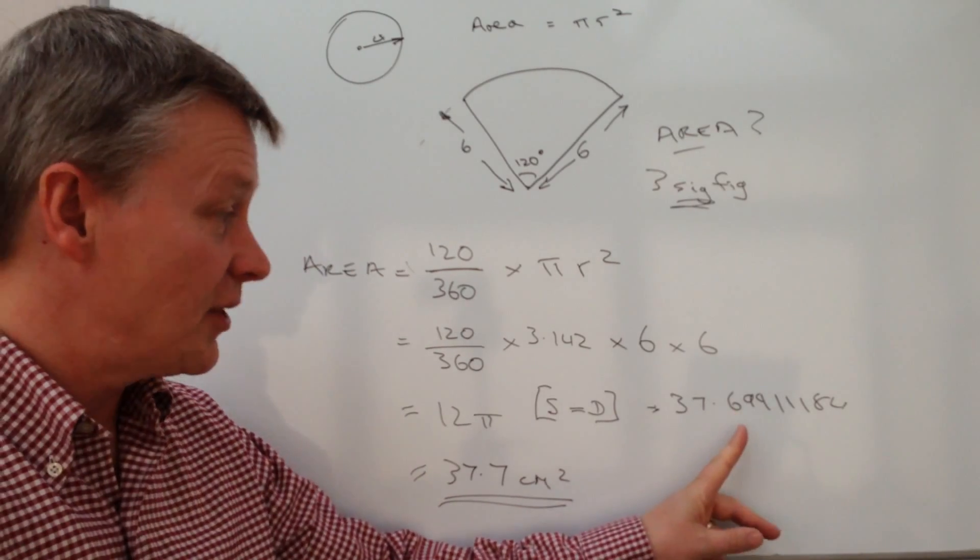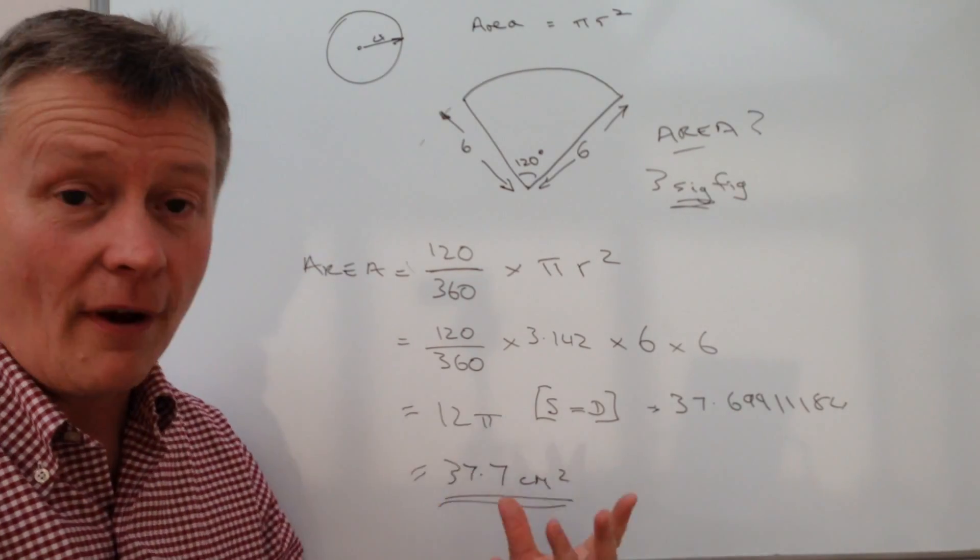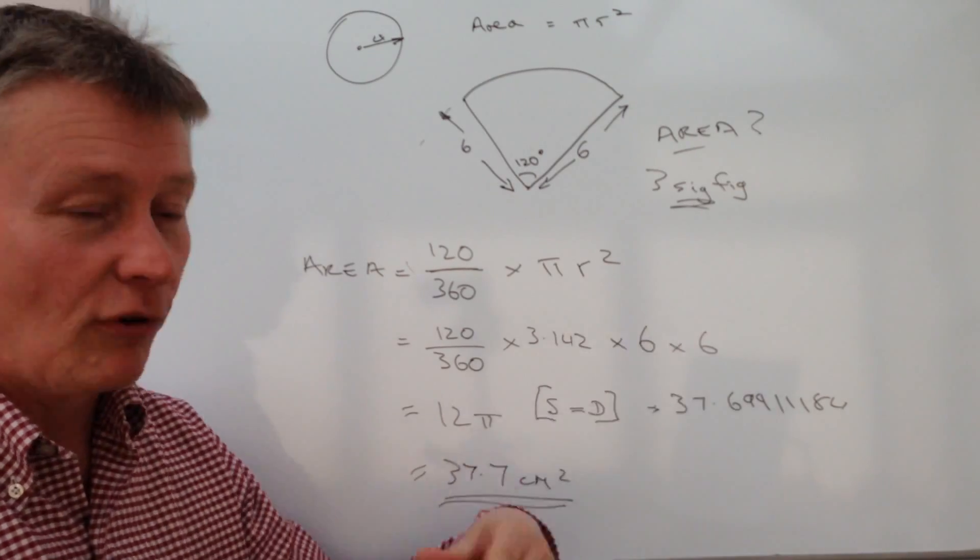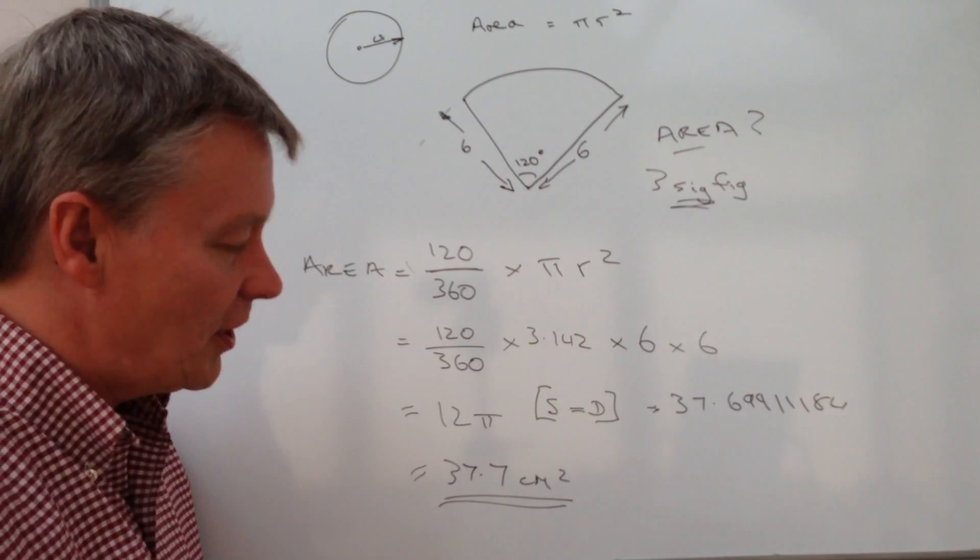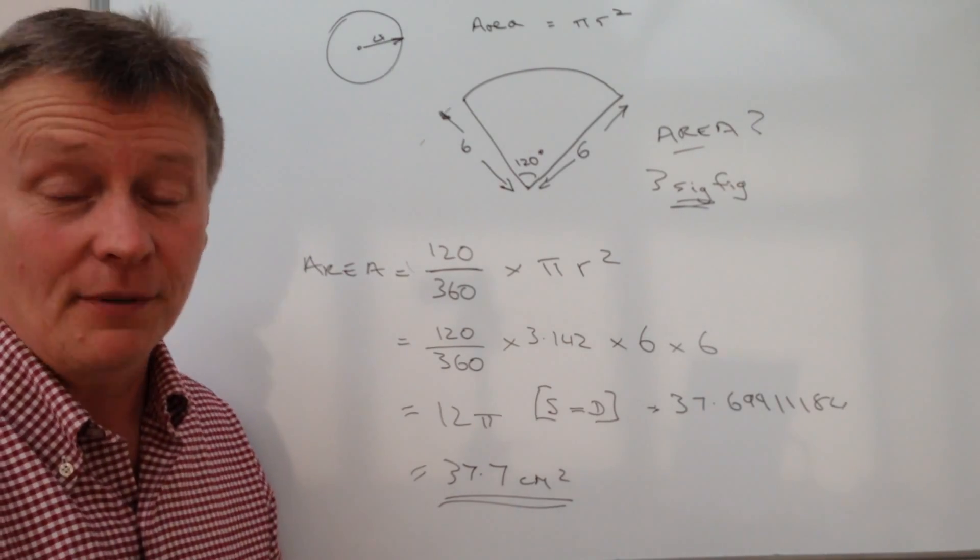So to answer the question, it's actually going to be 37.7 centimeters squared. I look at the third number, which is 6. It needs to change because the next number is a 9. So therefore, that 6 rounds up to 7.